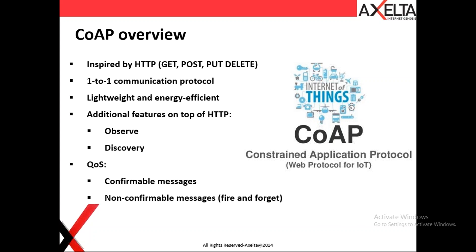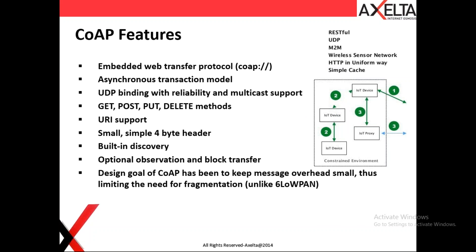These features set CoAP apart from HTTP. CoAP also supports confirmable and non-confirmable message delivery. Confirmable is similar to receiving a delivery report — you get confirmation the message arrived. Non-confirmable is fire-and-forget, where you don't care whether the message is delivered at the endpoint. This is CoAP's equivalent of MQTT's Quality of Service levels (QoS 0, 1, 2).